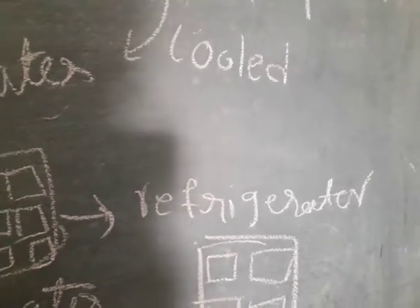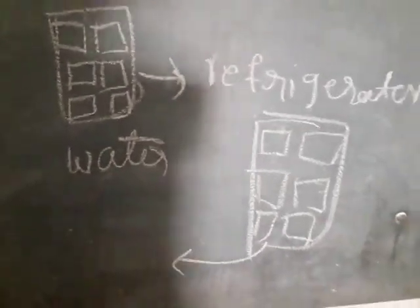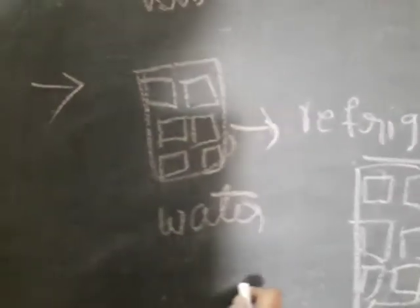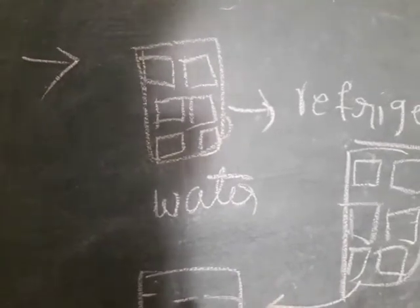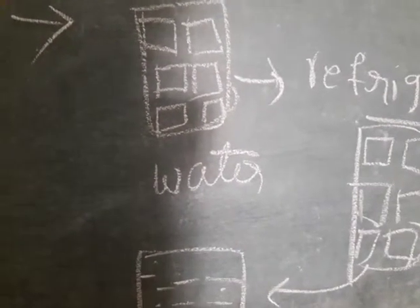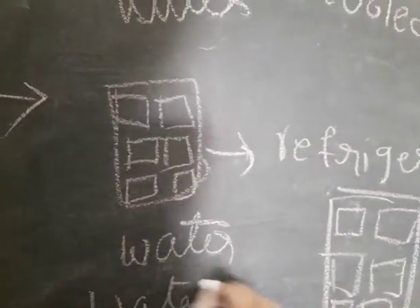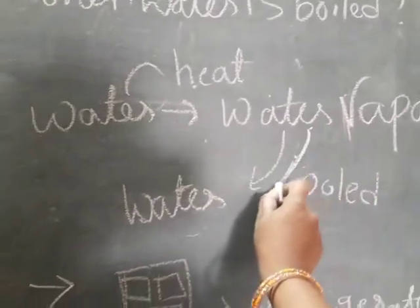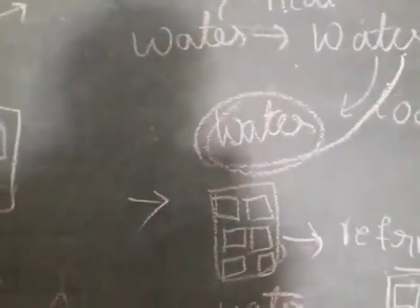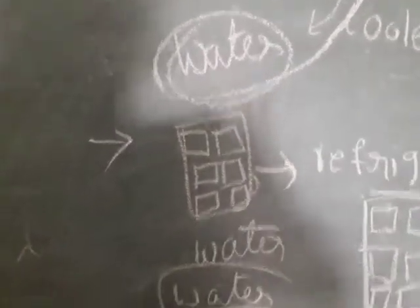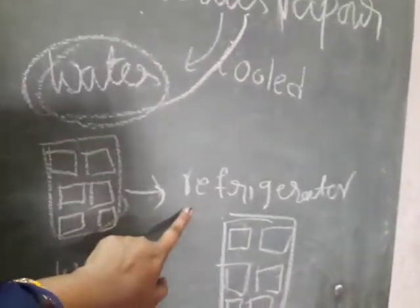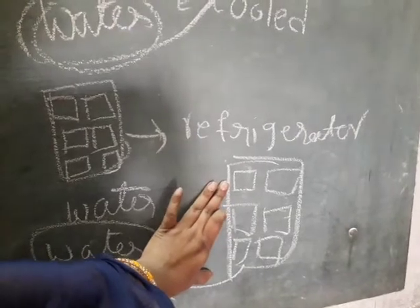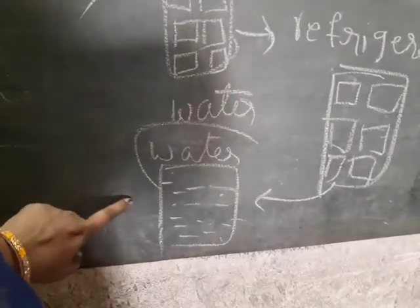Now take those ice cubes and keep them outside the refrigerator for some time. They will change back to water. So when we cool water, it changes to ice, and when that ice is left outside, it melts and changes back to water.